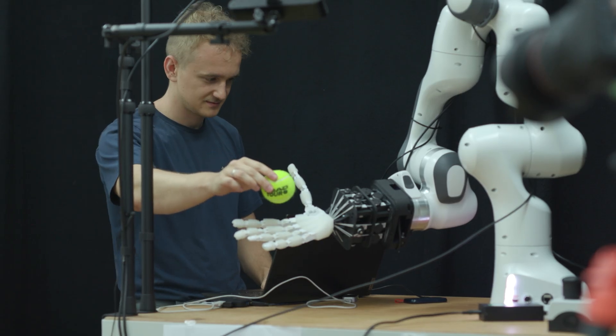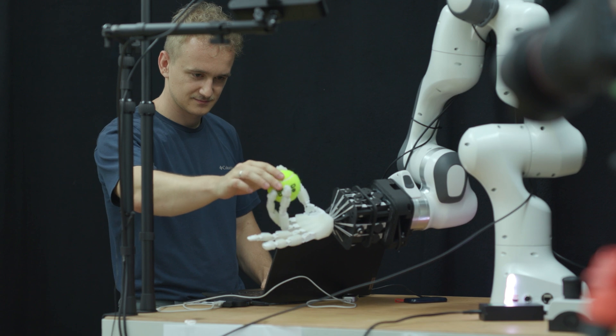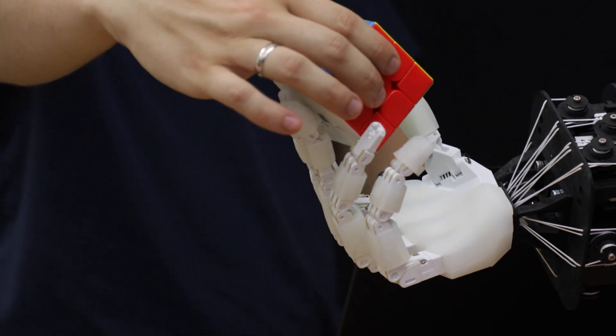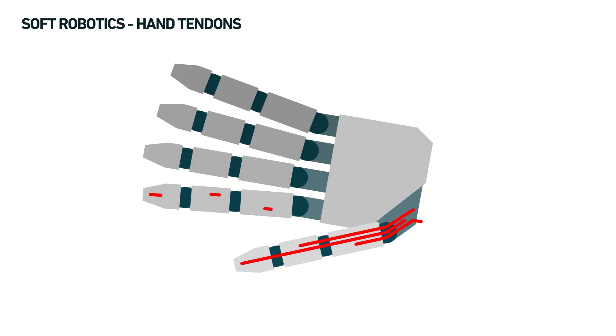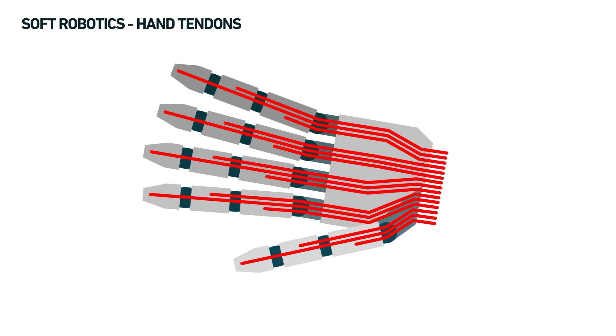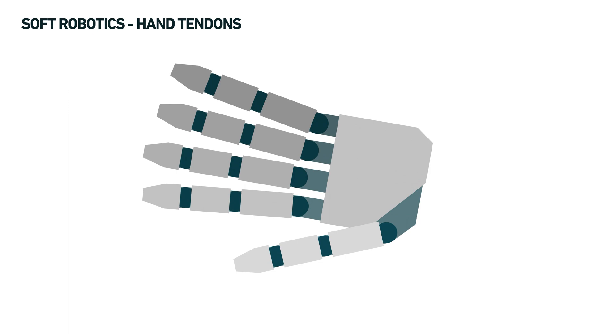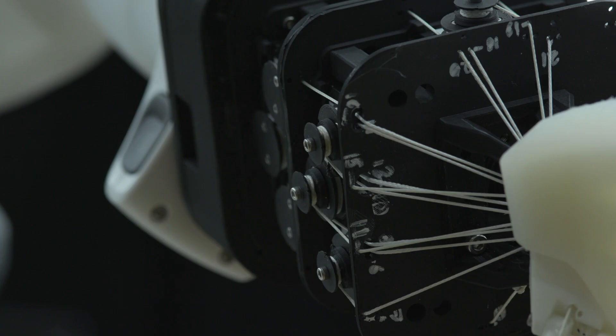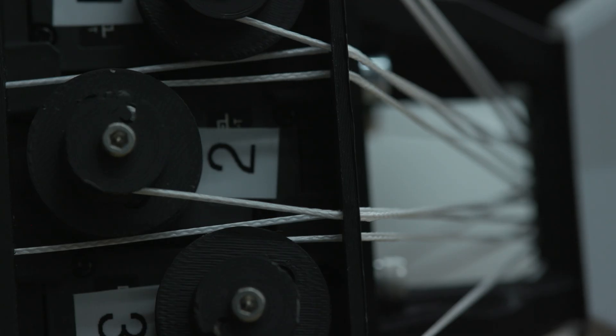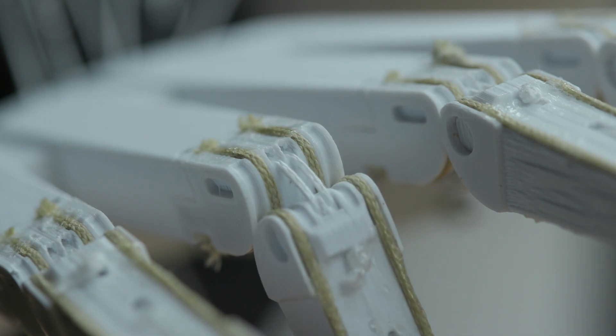Actuators act as the hand's muscles and cause force. However, that alone wouldn't enable finger movement. That's why tendons play a crucial role. They connect the actuators to the bones, therefore enabling finger movement. The actuators cause a force that tensions a tendon, which in return pulls on a finger.